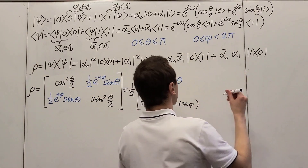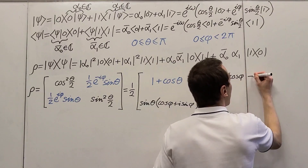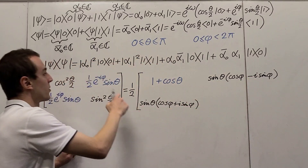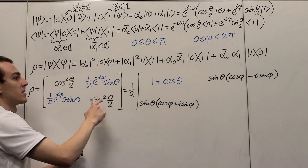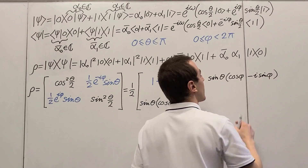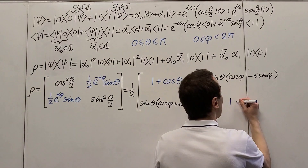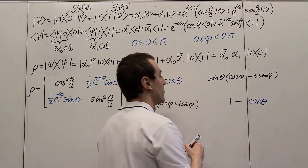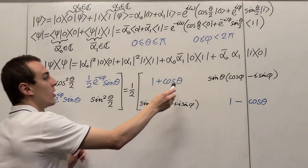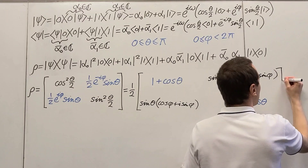Now for the remaining terms: we get sine theta times cosine phi minus i times sine phi. The minus sign comes from the minus sign in the exponent — taking the complex conjugate of the exponential gives a minus sign as the coefficient of i. For the sine squared term, the analogous identity gives one half times one minus cosine theta — that is the difference between cosine squared and sine squared. Notice that all four terms have a factor of one half, which we've factored out on the left-hand side.